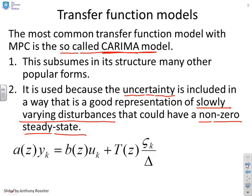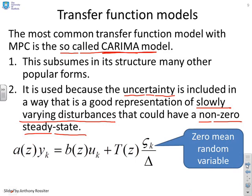And this is what the CARIMA model looks like then. You'll notice the key thing is this term over here, so we've got the standard output y, the standard input u, but then we've represented this slowly varying disturbance as some polynomial T(z) times zeta over delta. And the key thing is zeta is a zero mean random variable, and zeta over delta gives you a sort of random walk which represents this slowly varying effect.